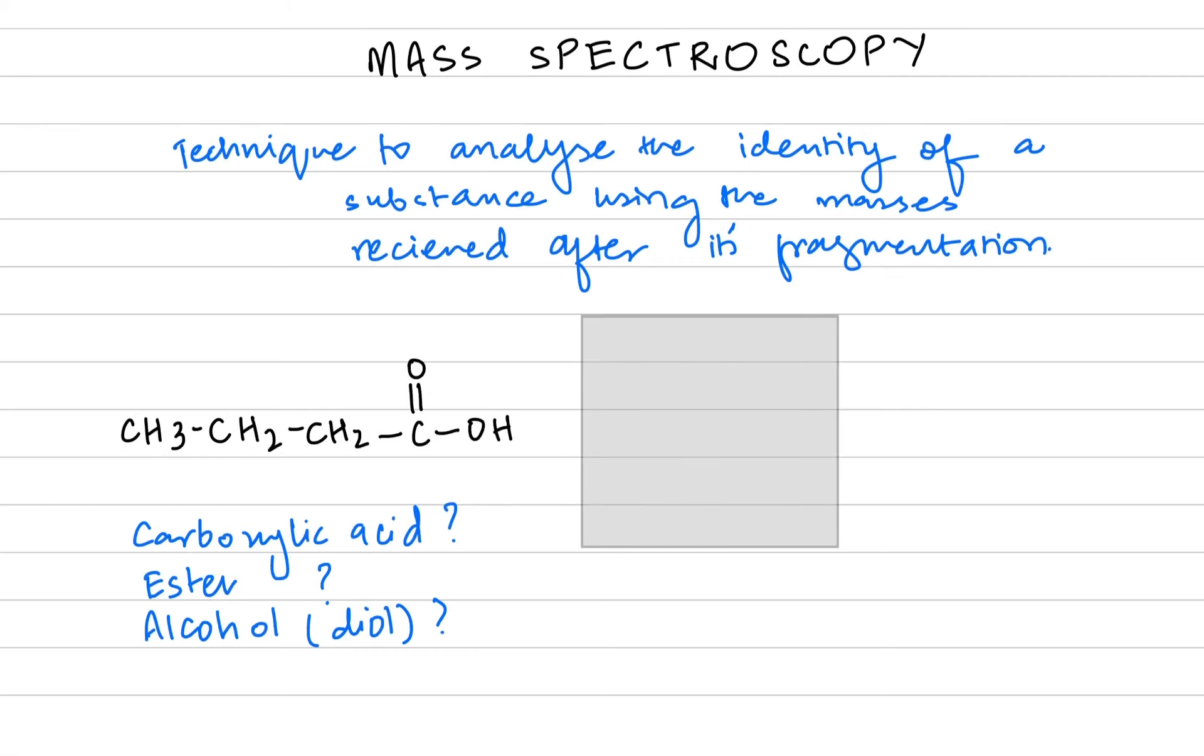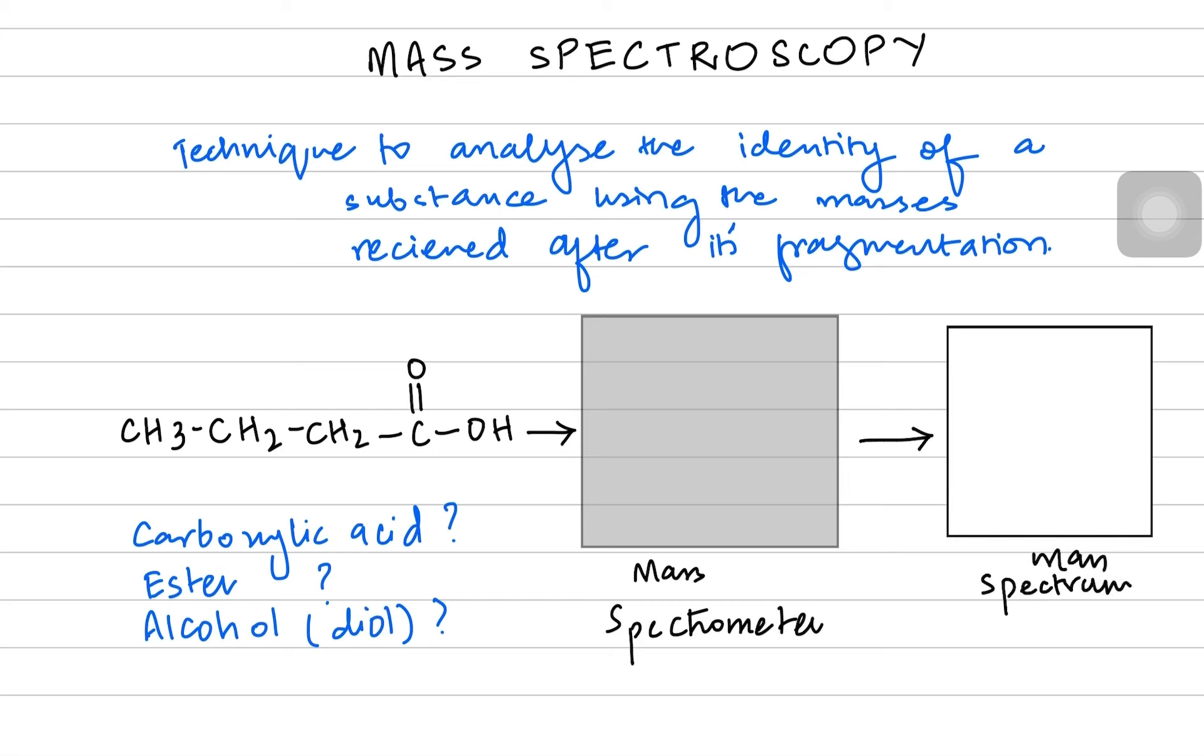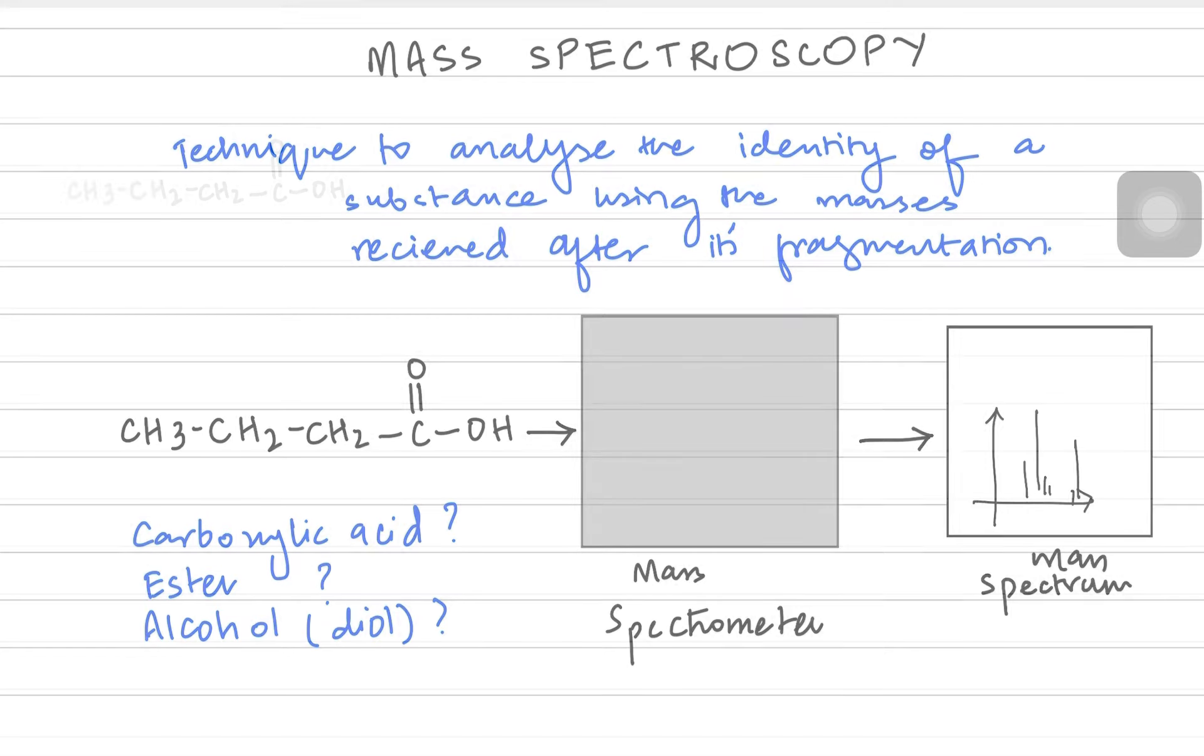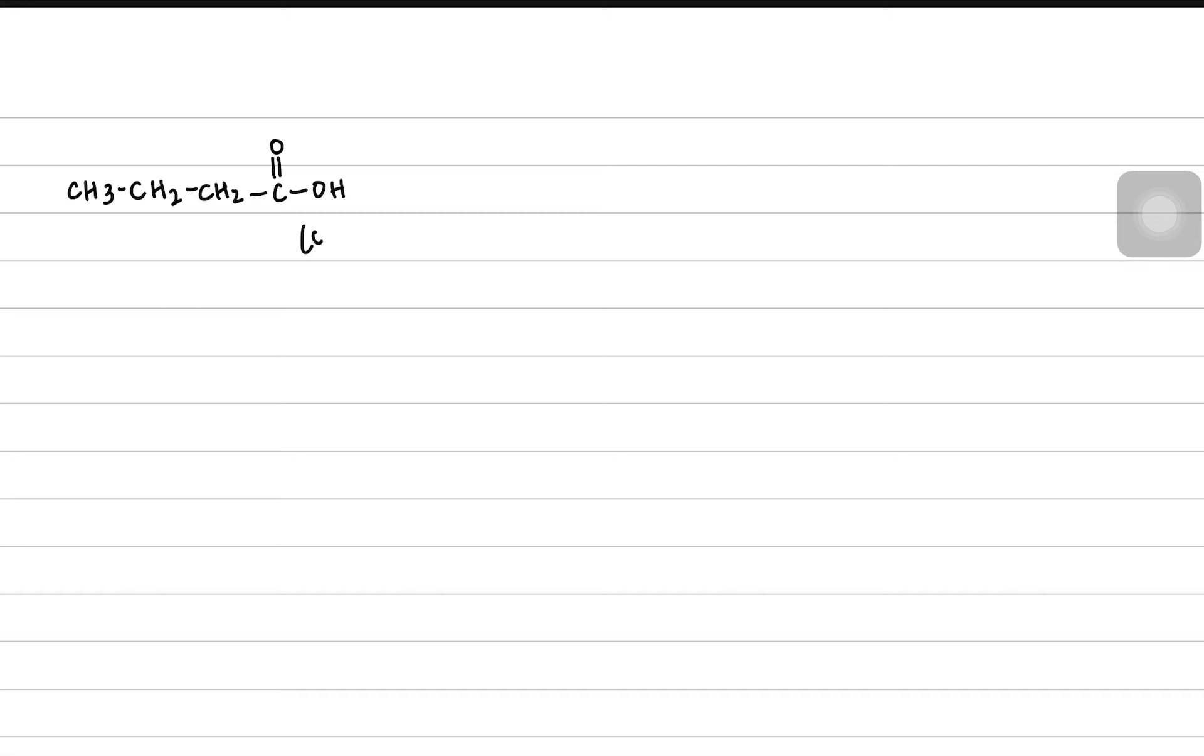Imagine we have the actual structure of the molecule. Now we know that it's a butanoic acid, but to analyze that we subject this molecule to a mass spectrometer and as a result what we receive is a mass spec. This is basically a spectrum of various masses received after the fragmentation.